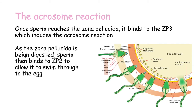Once the sperm cell reaches the zona pellucida it will bind to zona pellucida protein 3 or ZP3, which induces the acrosome reaction. The acrosome reaction is the release of enzymes contained in the acrosome in order to digest the zona pellucida. When the sperm first comes into contact with the zona pellucida it binds to the ZP3 proteins and expels the contents of the acrosome, which digests through the zona pellucida.